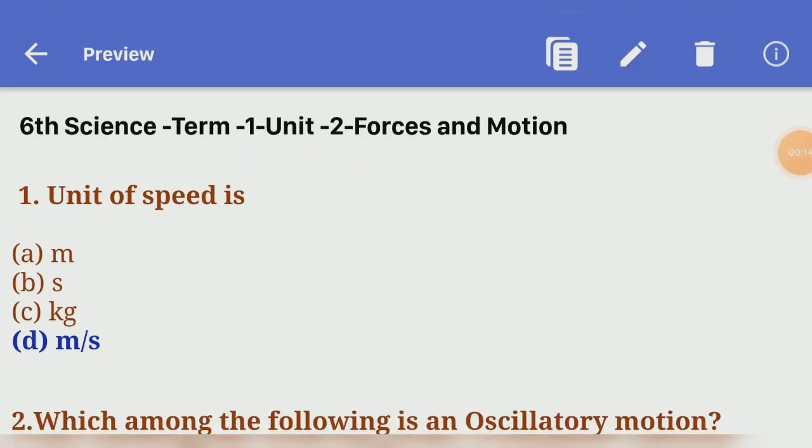First one, choose the correct answer. The unit of speed is - four options given. Which answer is correct? Answer D, meters by second.